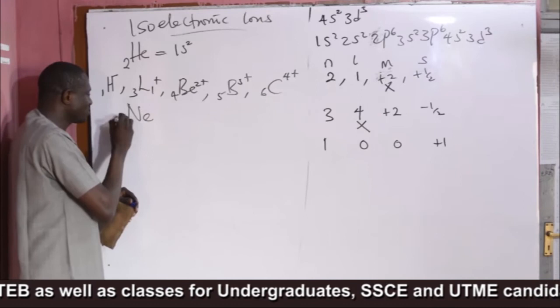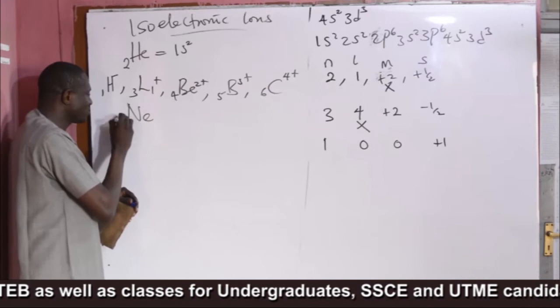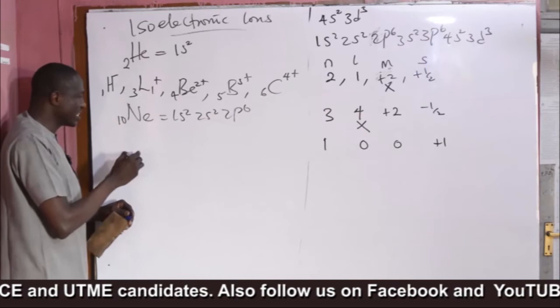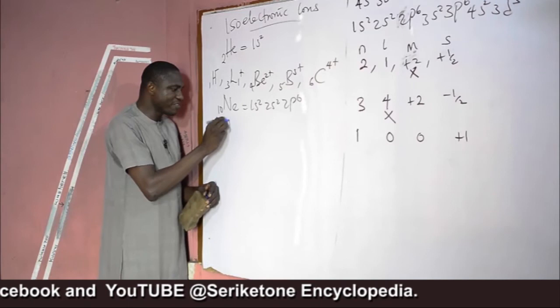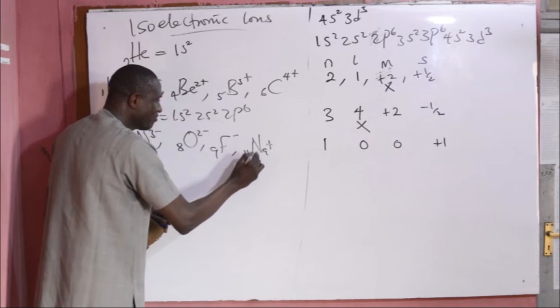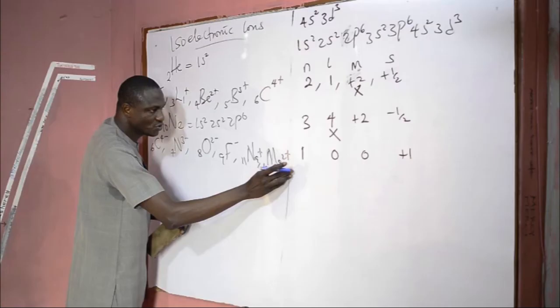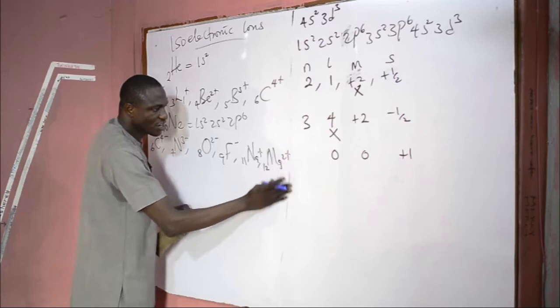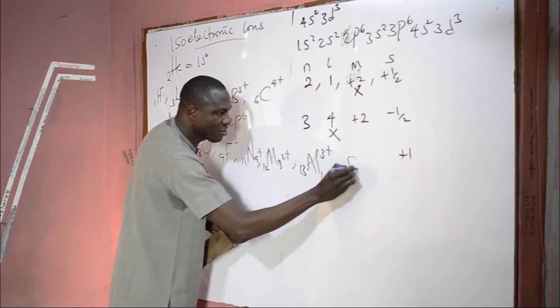What are the isoelectronic ions to neon? Neon has 10 electrons with configuration 1s2, 2s2, 2p6. In this case, we have: carbide C⁴⁻ (6 + 4 = 10), nitride N³⁻ (7 + 3 = 10), oxide O²⁻ (8 + 2 = 10), fluoride F⁻ (9 + 1 = 10), sodium Na⁺ (11 − 1 = 10), magnesium Mg²⁺ (12 − 2 = 10), aluminium Al³⁺ (13 − 3 = 10), and silicon Si⁴⁻ (14 − 4 = 10). All are isoelectronic ions to neon.